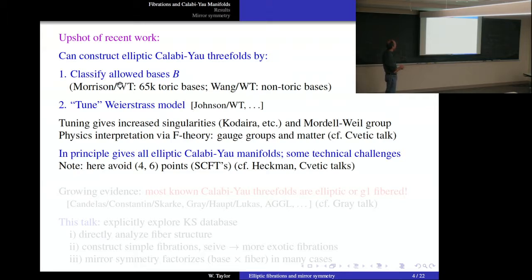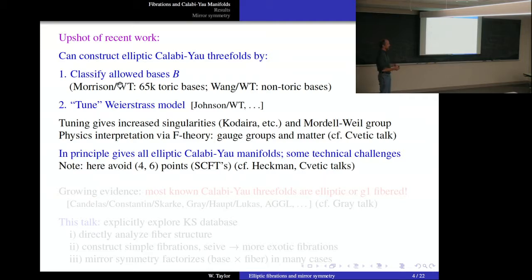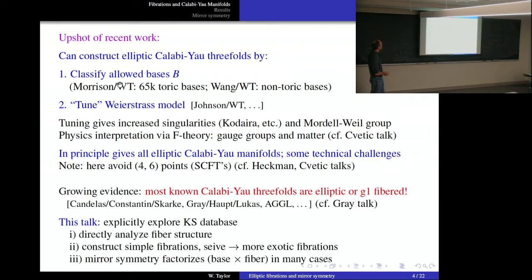The toric bases we classified with Dave Morrison. Even non-toric bases, by keeping track of the combinatorial data of the base, we can basically make a list. There are some technical issues at lower Hodge numbers, but this in principle gives us a way of classifying all Calabi-Yau threefolds that are elliptically fibered at large Hodge numbers. We first classify the bases, then tune the Weierstrass models to get bigger gauge groups and bigger Kodaira singularity types.